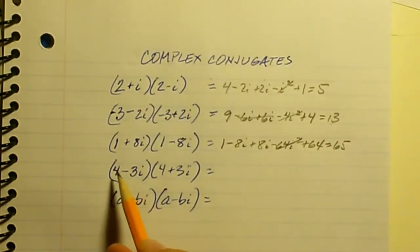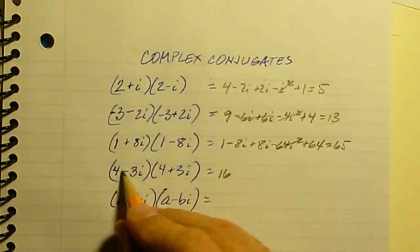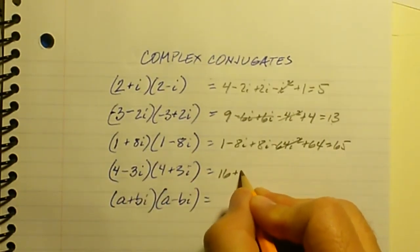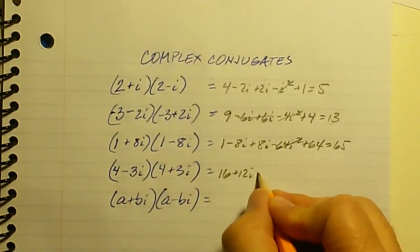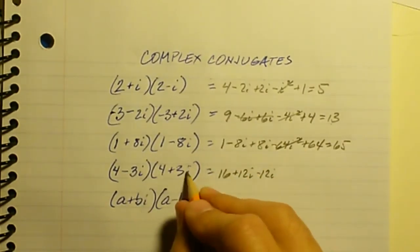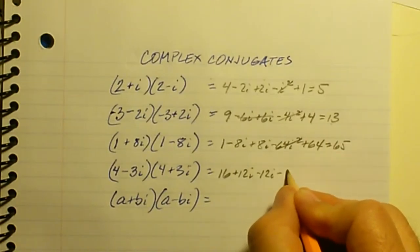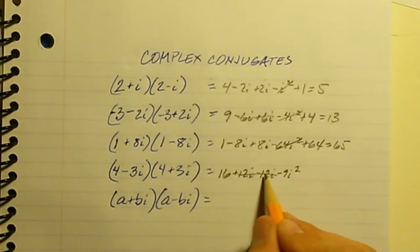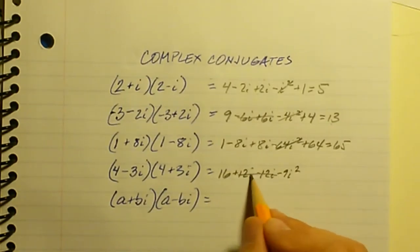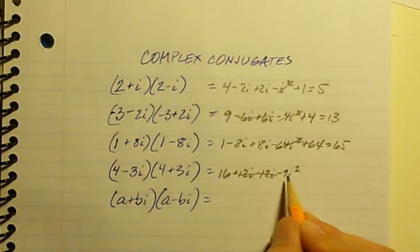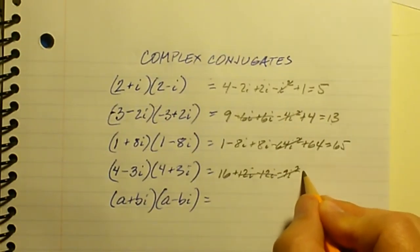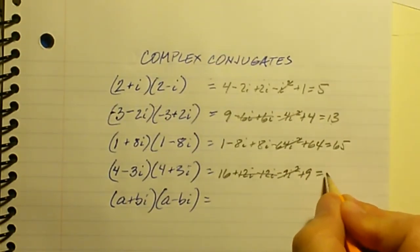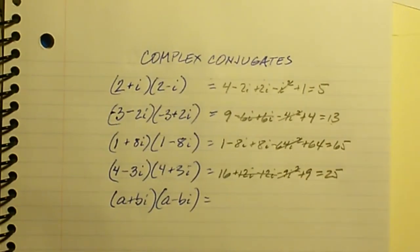And here: 4 times 4 is 16, 4 times 3i is plus 12i, negative 3i times 4 is minus 12i — the middle terms are additive inverses and add up to zero — and negative 3i times positive 3i is minus 9i squared, which is just 16 plus 9, which is 25.